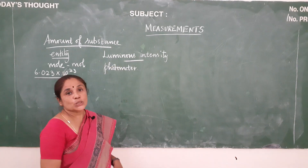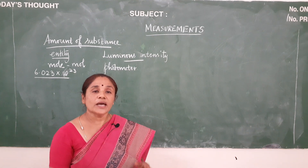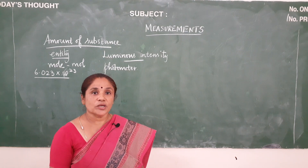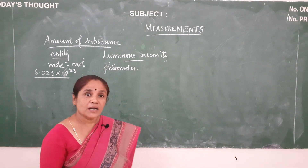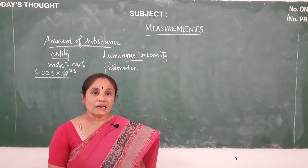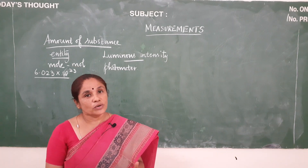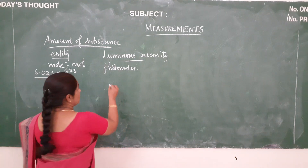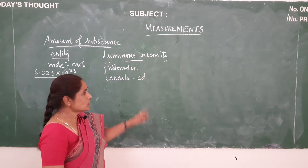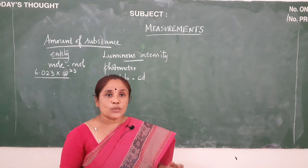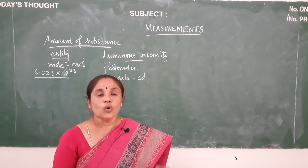Now let us define what luminous intensity is. Luminous intensity is nothing but the measure of the power of the emitted light by the light source in a particular direction per unit solid angle. The SI unit for luminous intensity is candela and it is denoted by cd. The light emitted by a wax candle is more or less equal to one candela.